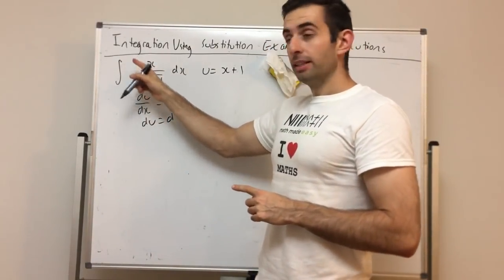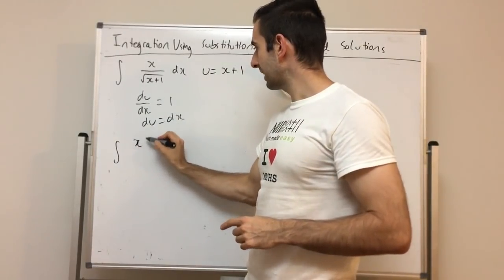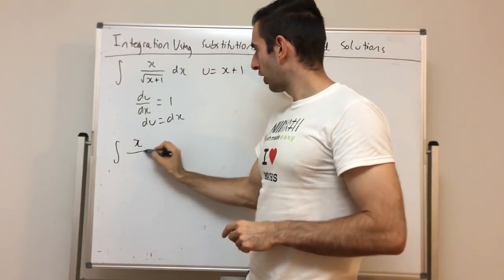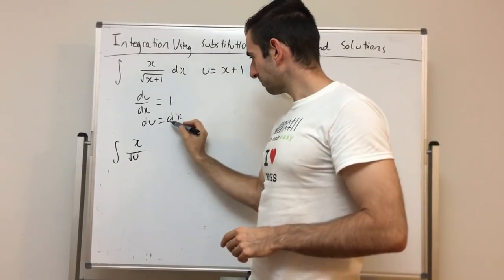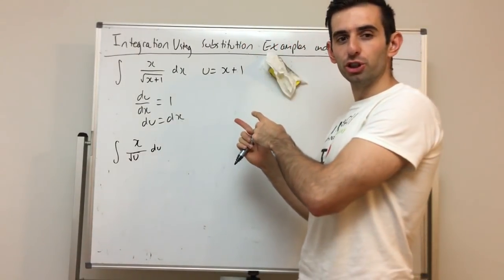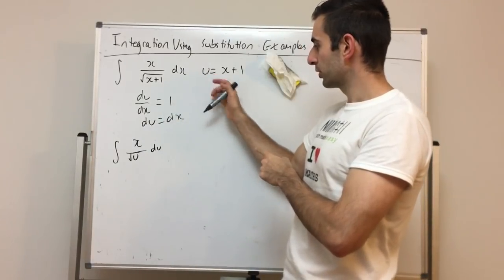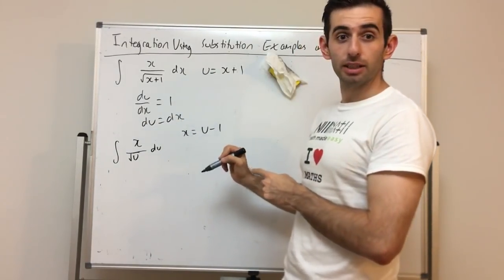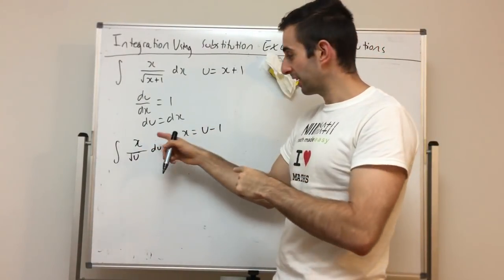There are no bounds to substitute, so we go directly to substituting everything in. x stays as x over √u, because u = x + 1, and dx = du. After substitution, we still have an x left. So we go back to the original substitution: u = x + 1, which means x = u − 1, and we substitute that in.